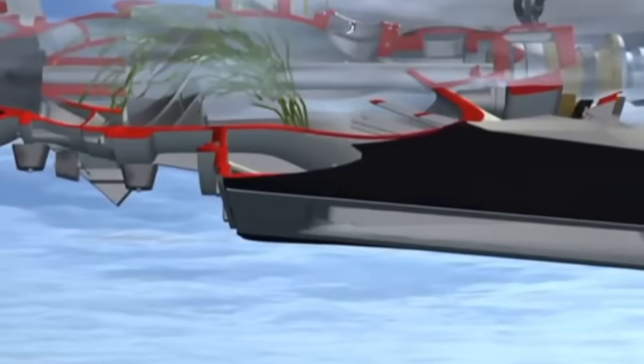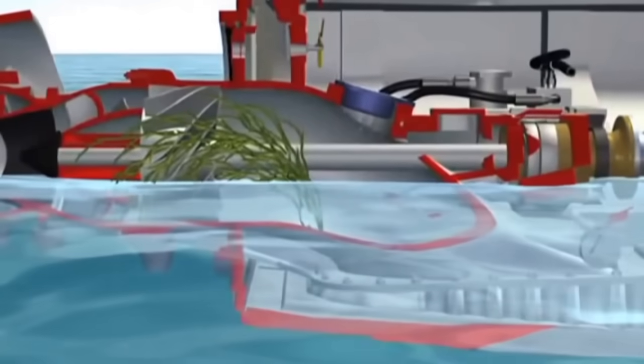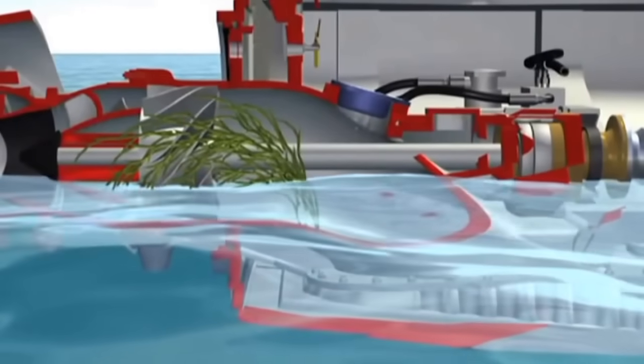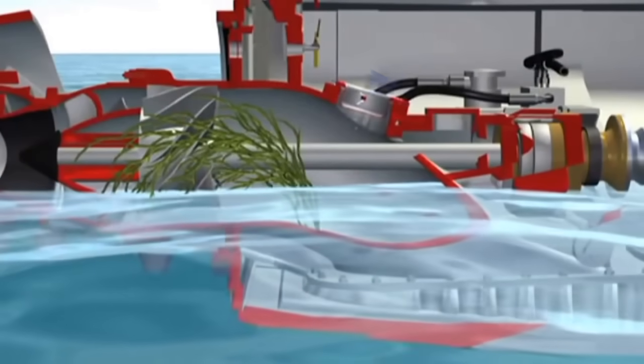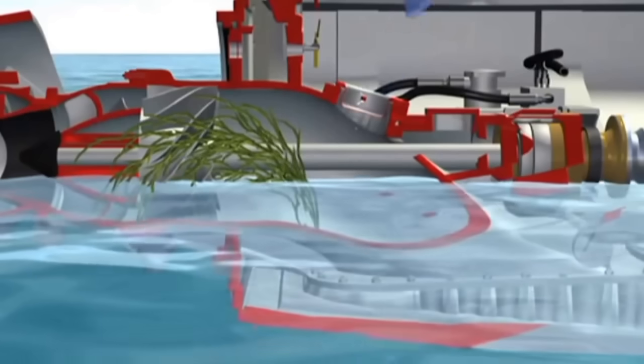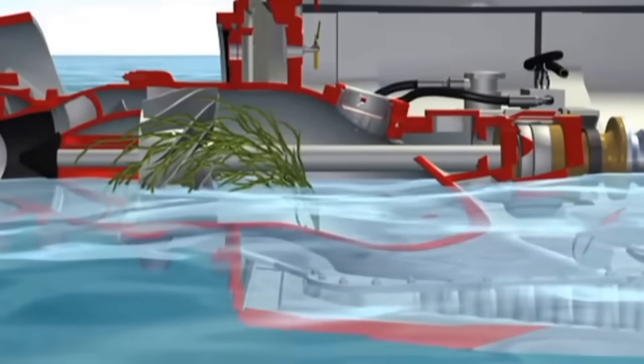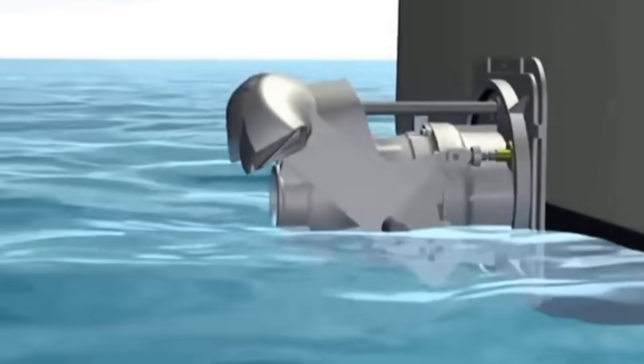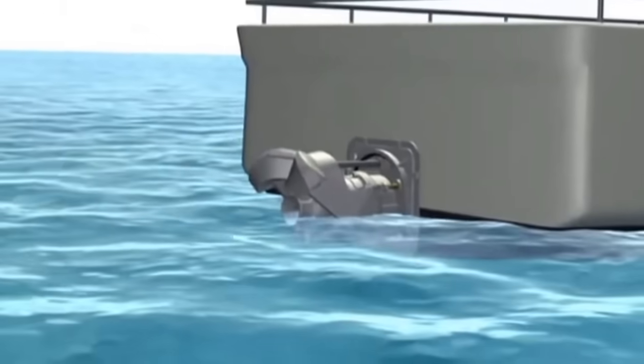If something is ingested into the waterjet and wraps around the mainshaft or impeller, it can be cleared by disengaging the waterjet before opening the inspection hatch cover and reaching in to remove the object by hand. Always ensure your inspection hatch is above the water line before opening to prevent flooding.